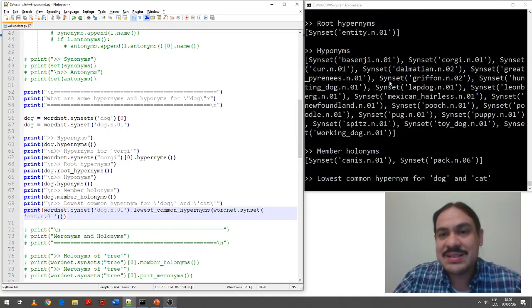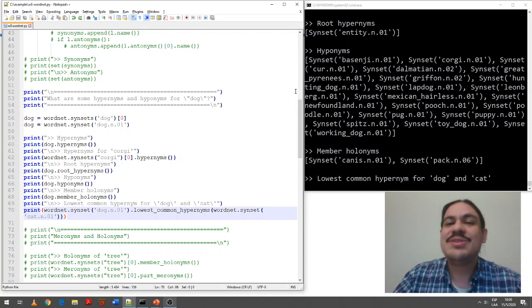The hyponyms tell us the subtypes for the word. So, dog has, a hyponym for dog has, as examples, corgi, dalmatian, great Pyrenees, pug, and so forth. So, these are all kinds of dog.